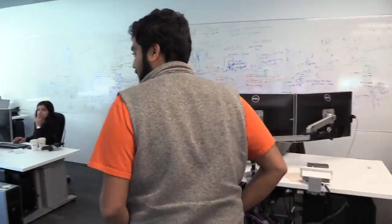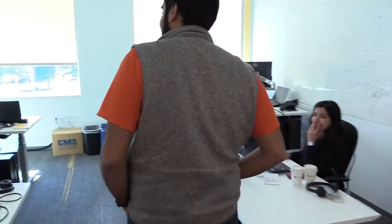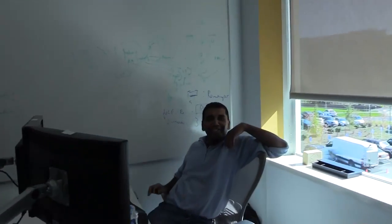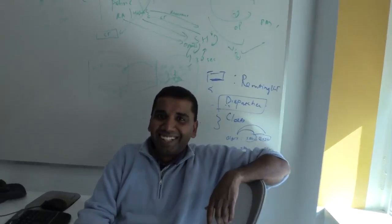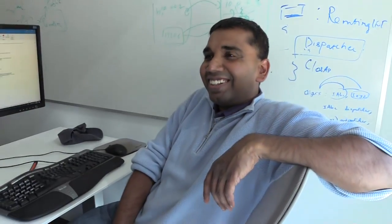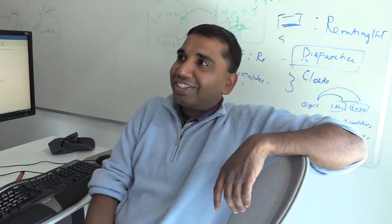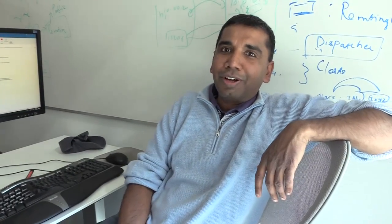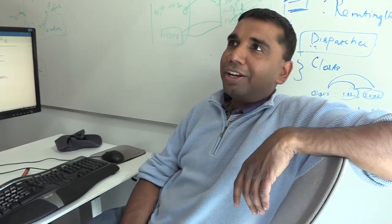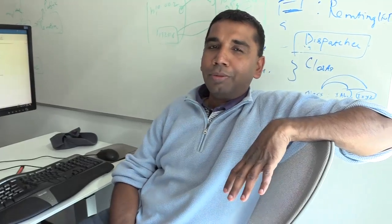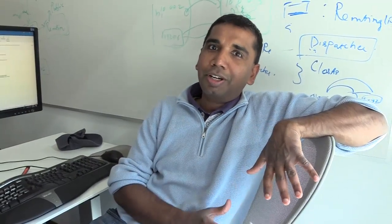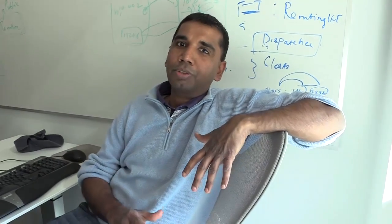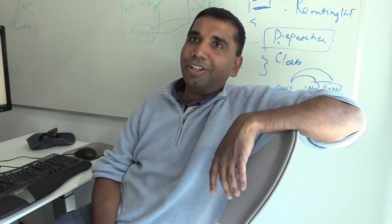We'll be shaking in the corner and bother him. Can we bother you for 10 seconds? Sure. How are you doing? Could we get you to introduce yourself? My name is Abhishek Ram. I'm an engineer on the Service Fabric team. I work on a couple of things — one is the performance and scalability aspects of Service Fabric, and also on persistent storage for containers.